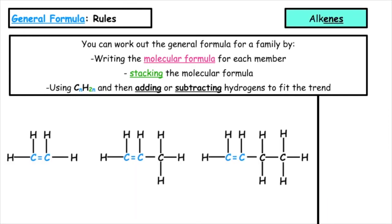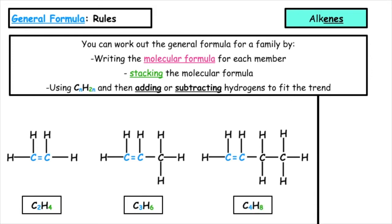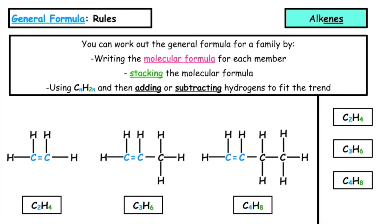Let's work out the general formula for the alkenes. We have molecular formulas C2H4, C3H6, and C4H8. We stack the formulas by increasing carbon chain length and start with CnH2n. 2 times 2 is 4, 3 times 2 is 6, and 4 times 2 is 8 — so the general formula for the alkenes is just CnH2n.